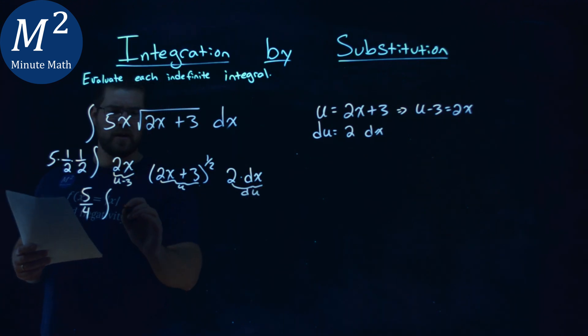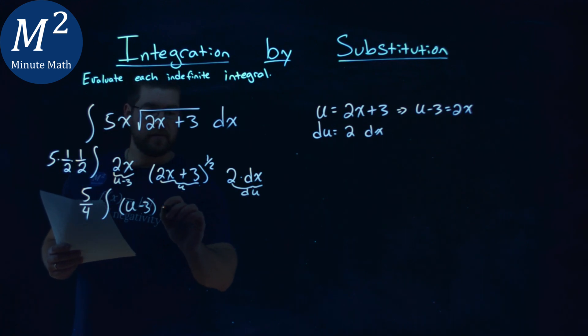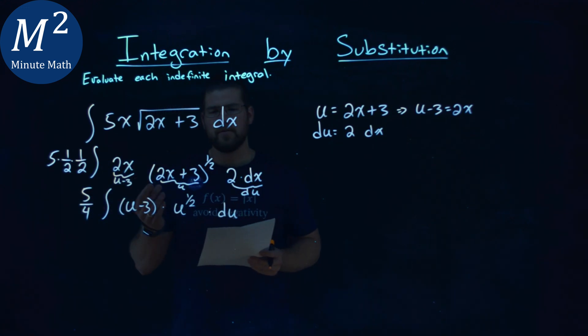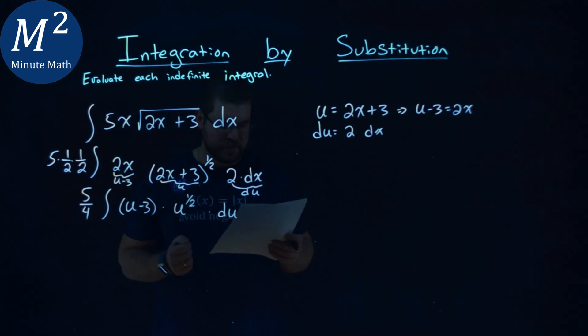All right, so you can see it. So instead of 2x, I have a u minus the 3 here, multiplied by my u to the 1 half power times just du. Now, this looks like a much easier integral to solve.